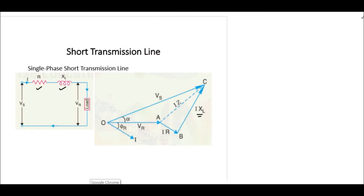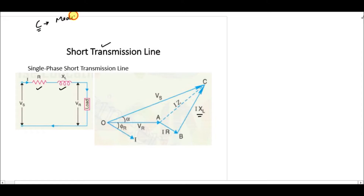In this lecture we are going to talk about the short transmission line — its modeling — and at the end of the lecture we are going to solve a question related to the same topic. As discussed in the last lecture, the short transmission line is modeled using only resistance and inductance; capacitance is neglected. Capacitance is used in medium and long transmission line modeling.